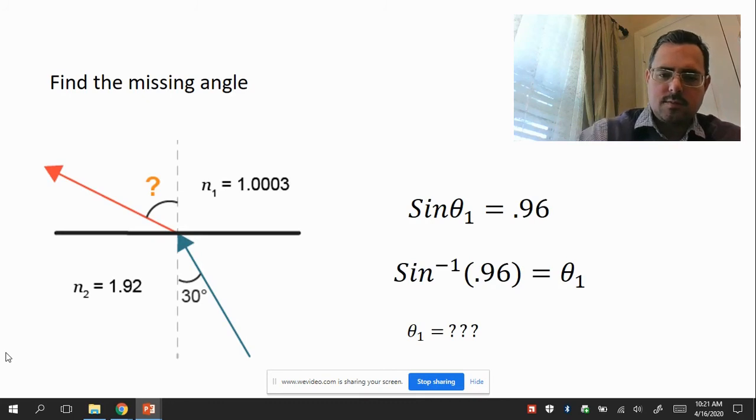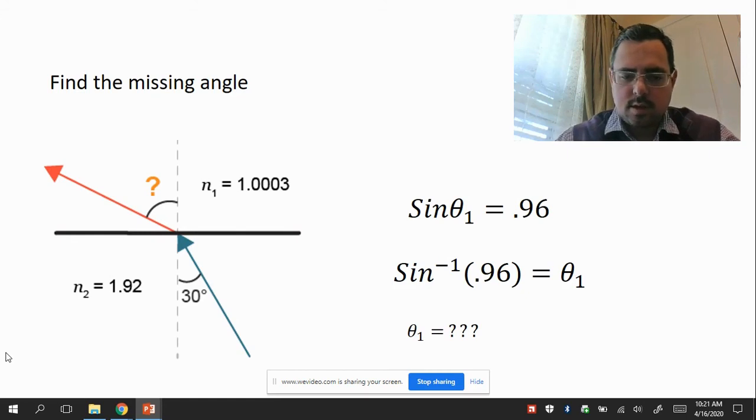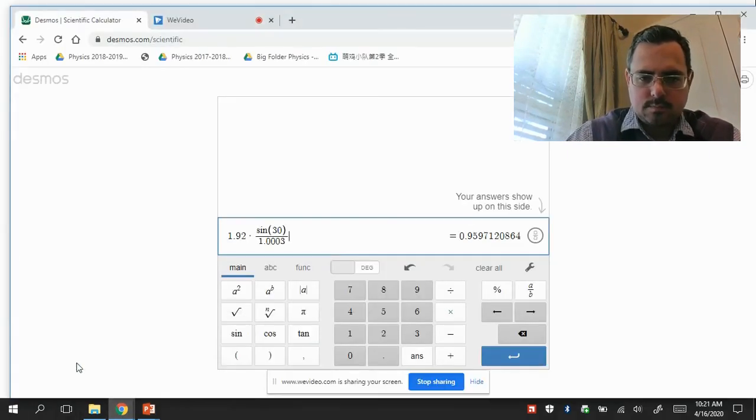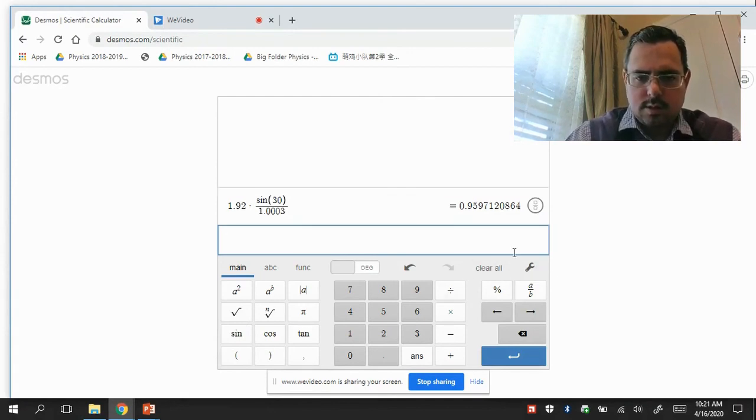So here's how we do that. We have to use what's called an inverse sine function. And if we use that and put 0.96 in, then that will tell us what the actual angle is. So we're going to have to do this on the online calculator as well. So let me pull that up again. And I'll move on to the next thing.